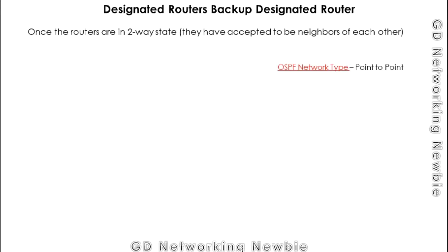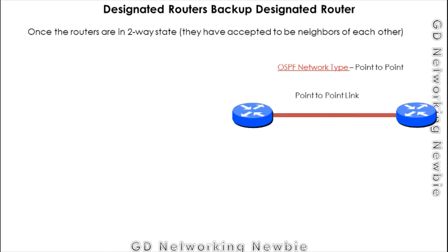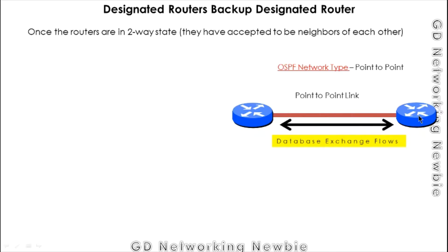For example, if we have two routers that exchange hello messages and agree, they become neighbors by fulfilling all the requirements. Sometimes we have a very simple OSPF network known as point-to-point. In a point-to-point OSPF network type, messages travel from one point to another, and the database exchange — LSA or LSDB (Link State Advertisement or Link State Database) — flows between those two points.